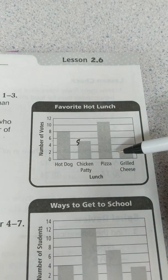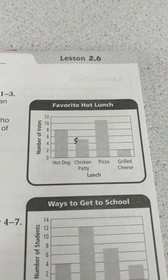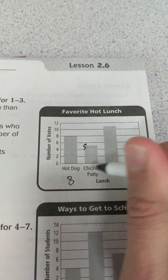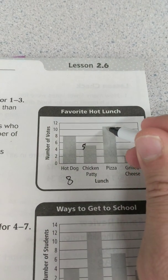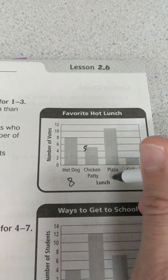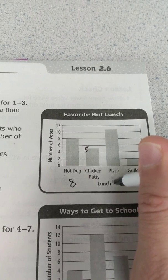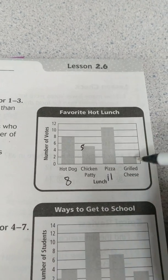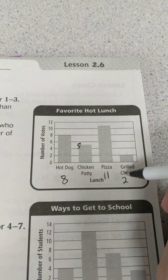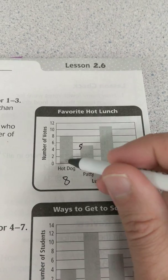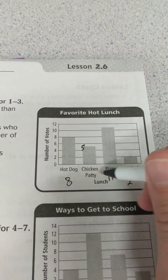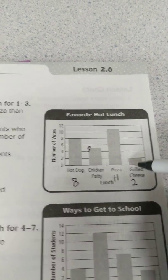But what about the rest of them — who did not choose chicken patty? I see eight for hot dogs, between ten and twelve for pizza so it should be eleven, and two for grilled cheese. So I need to find out how many are not chicken patties by adding up all the ones that are not chicken patties.